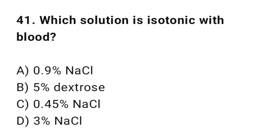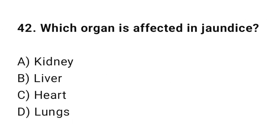Question 41: Which solution is isotonic with blood? The correct option is A: 0.9% NaCl. Question 42: Which organ is affected in jaundice? The correct option is B: Liver.